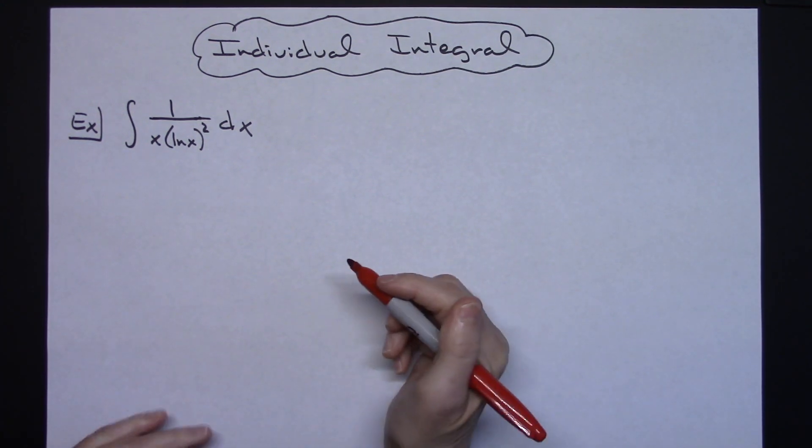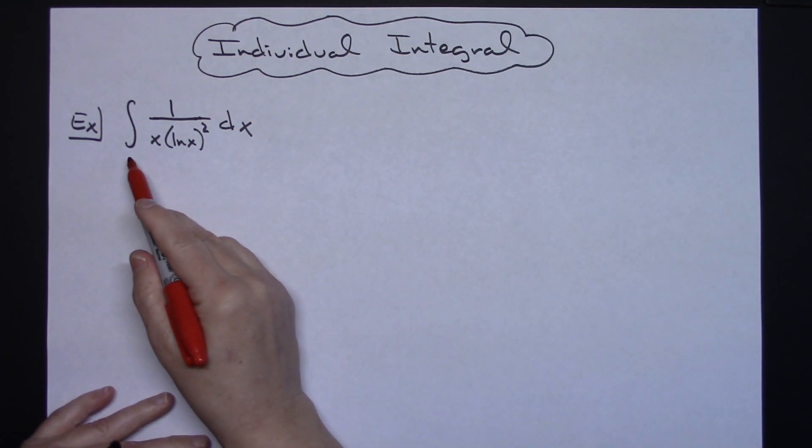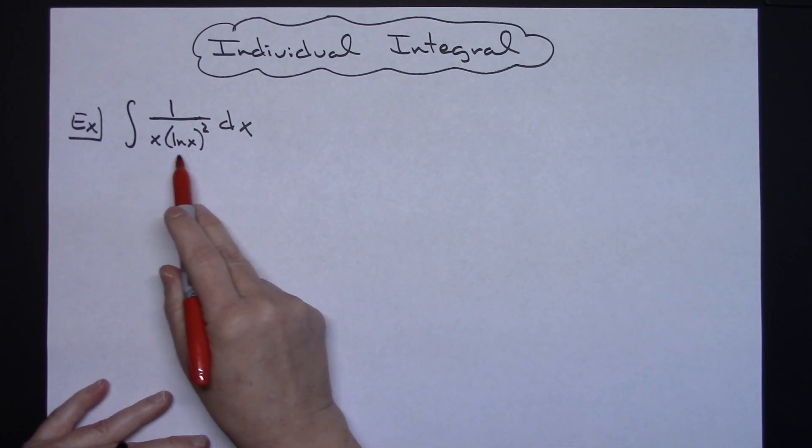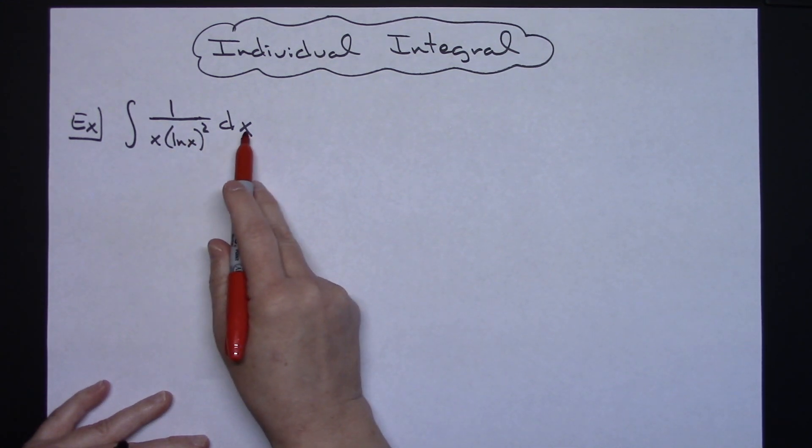In this video I'm going to be working out an individual integral. I'm going to take a look at the integral of 1 over x times the natural log of x quantity squared dx.